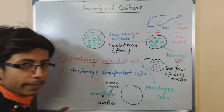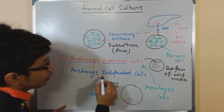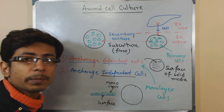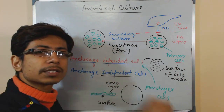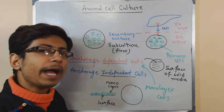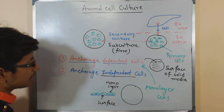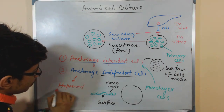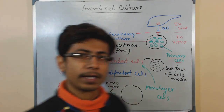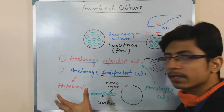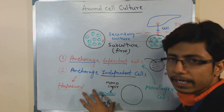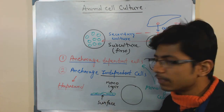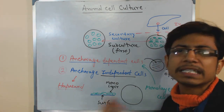On the other hand, the second type of cells are anchorage independent cells. They do not require anchorage for their growth, so they can easily grow in liquid media. You can just place those cells into the media and they can grow and divide. The growth of anchorage independent cells is kind of haphazard — they will grow just everywhere. Mostly, anchorage independent cells behave like cancer cells; they will grow and grow. Just put them into the media and they will grow.